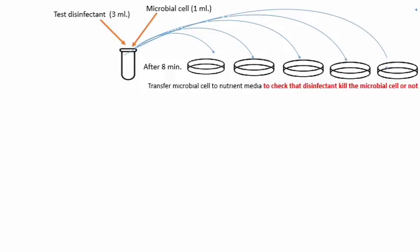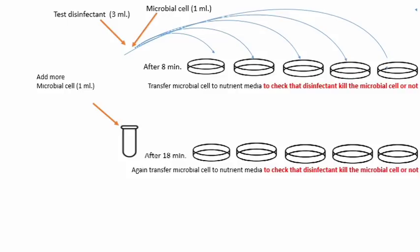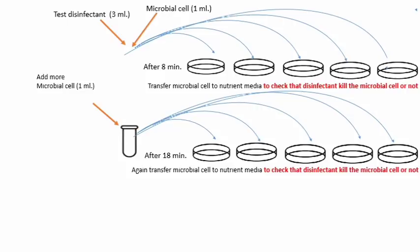Iske baad isi reaction mixture ko phir se liya jaata hai aur isme extra 1 ml bacterial cell add ki jaati hai — yani disinfectant ka solution wahi hai but isme 1 ml jo bacterial suspension hai usko aur add kiya gaya, yani number of bacterial cells increase ho gayi. Phir se 10 minutes ke liye rakhte hain. After 18 minutes, phir se is reaction mixture mein se 0.1 ml sample liya jaata hai aur 5 alag-alag petri dishes mein add kiya jaata hai — jisme recovery culture media filled hota hai. Is tarah check karte hain ki usi same disinfectant concentration mein, jisme microbial cells badh gayi hain, wo disinfectant is badhe hue microbial population ko kill kar raha hai ya nahi.